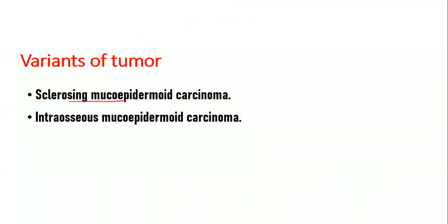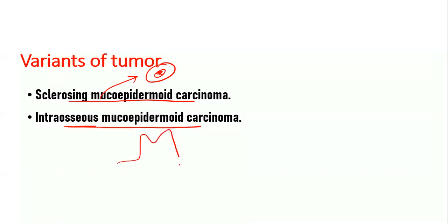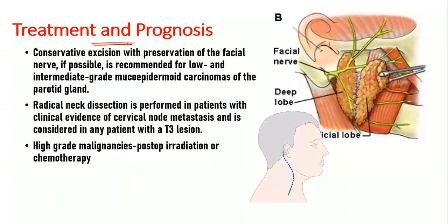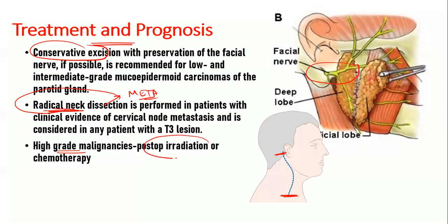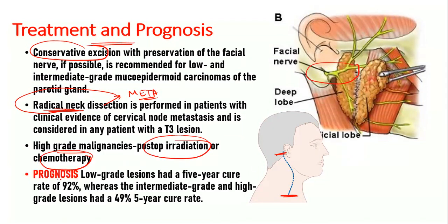Variants include sclerosing mucoepidermoid carcinoma, which shows intense sclerosis at the center, and intraosseous mucoepidermoid carcinoma, which occurs within bone. Treatment is mainly conservative excision with preservation of cranial nerve VII. If lymph nodes are involved, radical neck dissection is performed, removing lymph nodes from the angle of the mandible to the clavicle. High-grade malignancy may require post-operative radiation and chemotherapy. Prognosis is worst for high-grade and best for low-grade lesions.